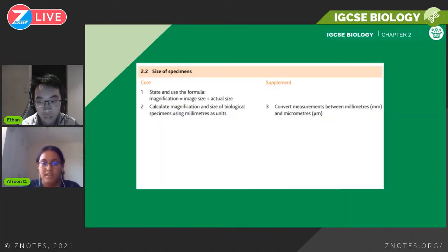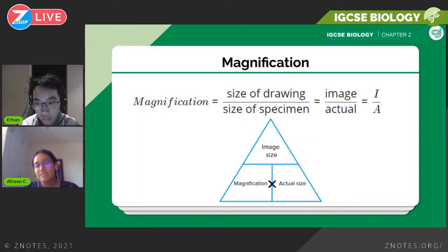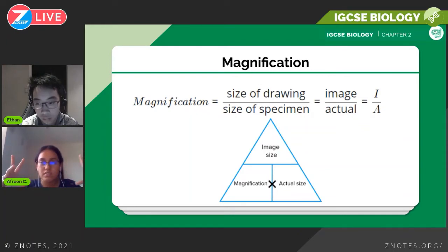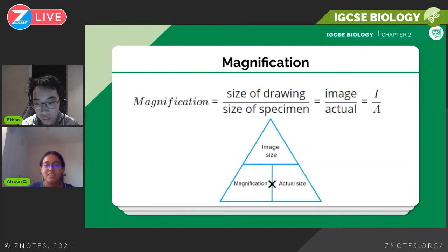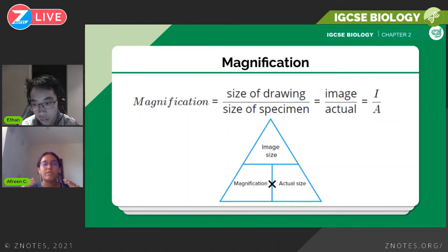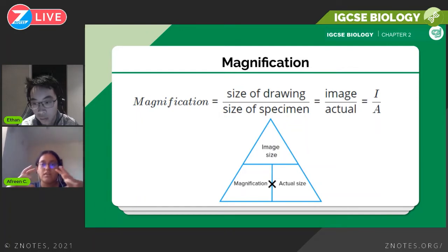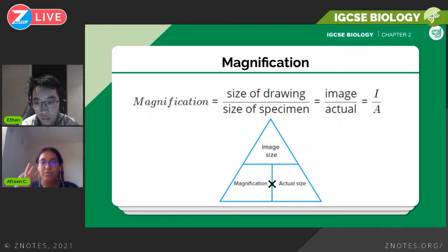Moving on to size of specimen — we'll talk about magnification, learn a formula, and do some conversions. They might give you a drawing and ask you to draw a magnified version. This almost always comes in paper six, the alternative to practical. When drawing a larger image, make sure you capture the major details — don't go for minor details like small circles, as you can lose marks. Use a sharp pencil, no shading, and erase cleanly so you don't leave lines that might confuse an examiner.